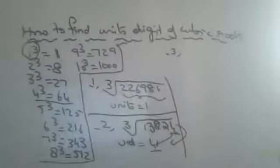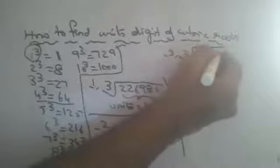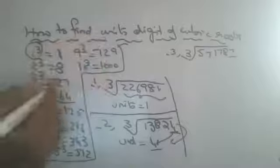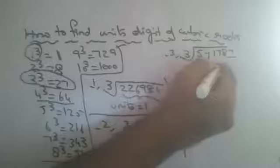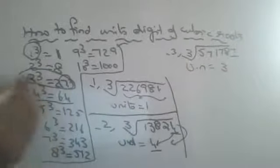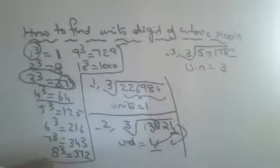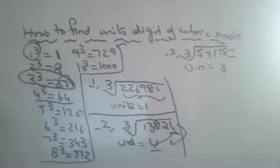You must concentrate on the last digit. What is the units digit of the cubic root of 571787? The last digit is 7. Which cube gives units digit 7? It is 3³=27, so units digit is compulsorily 3. It may be 13 cubed, 23 cubed, 33 cubed, 43 cubed, or 63 cubed — you can check it.